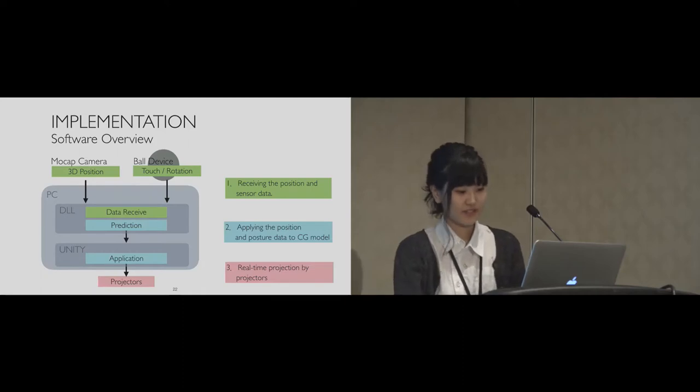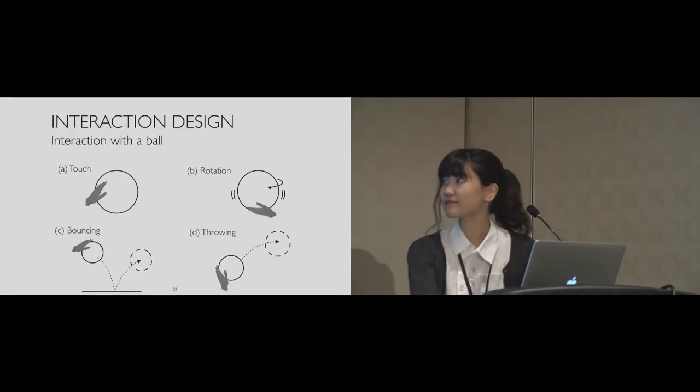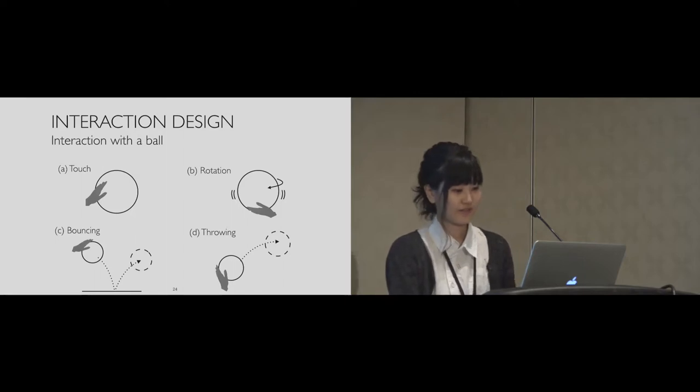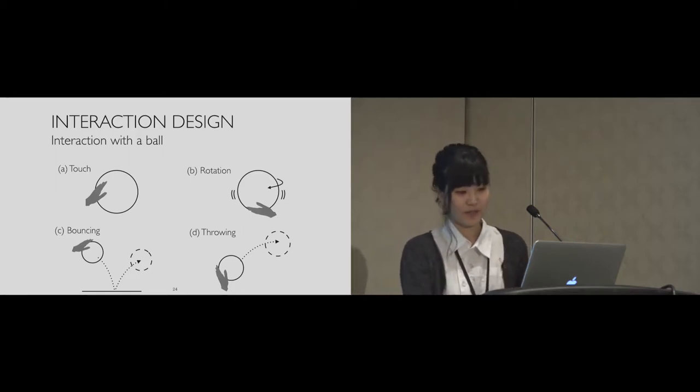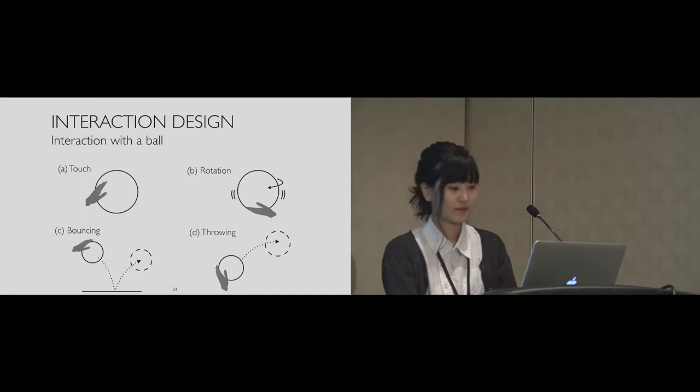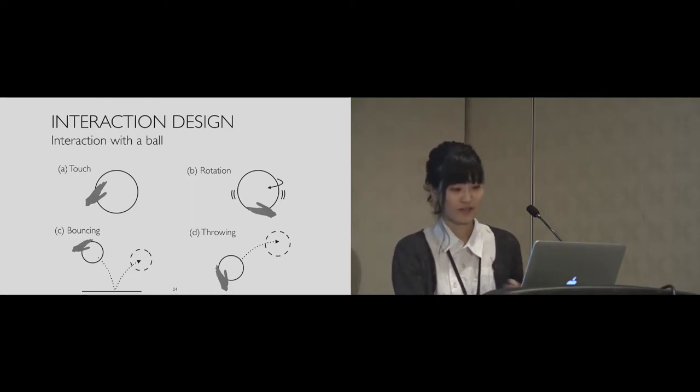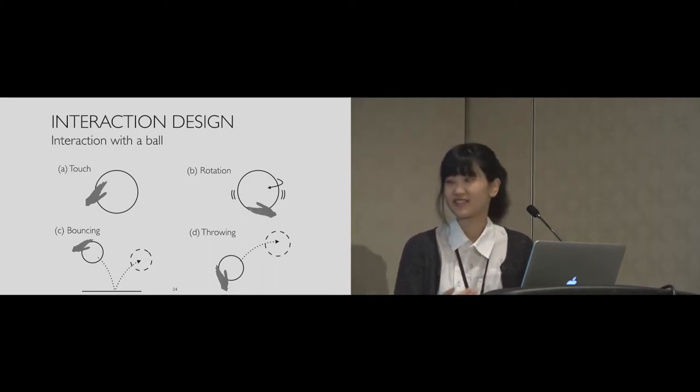Next, let's move on to interaction design. We implemented several interactions based on the affordance of a ball. We conducted a preliminary experiment to see how people interact with the ball, and these four interactions were mostly observed. So we chose touch, rotation, bouncing, and throwing as inputs to the display and assigned the basic operation to the spherical interactive display for each action.